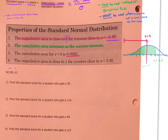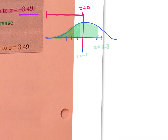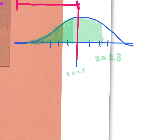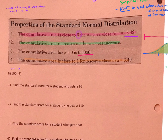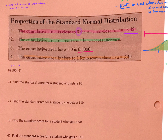Lastly, the cumulative area is close to one for z-scores that are close to 3.49. That's saying we are way up on the right tail. If we find the cumulative area of everything up to and including that location — shading all of that — the area is going to be close to what we know the full area of any density curve equals, which is 1.